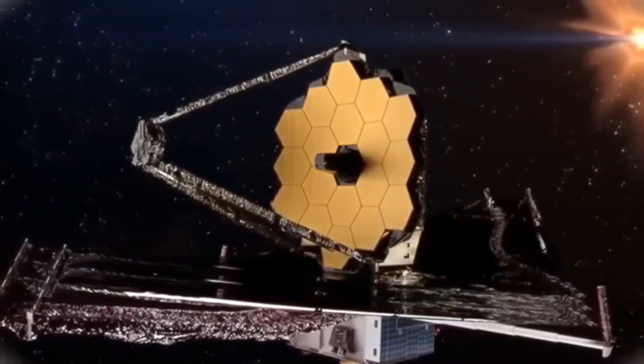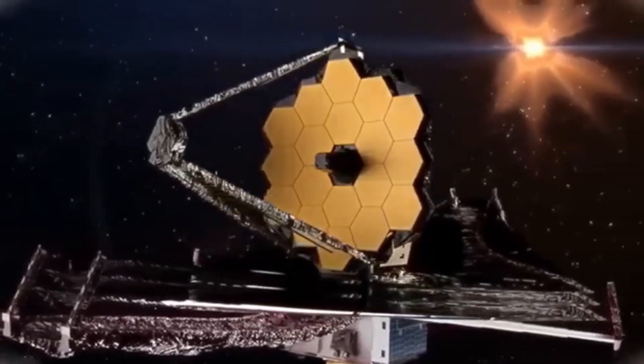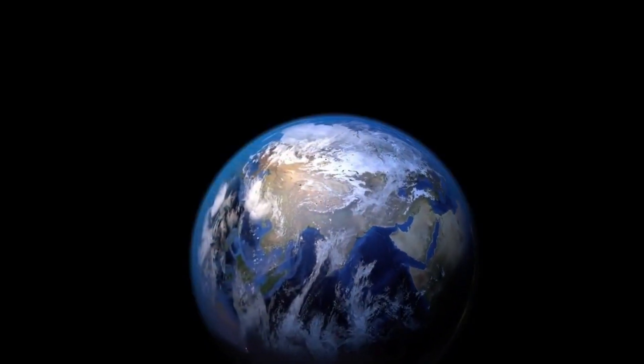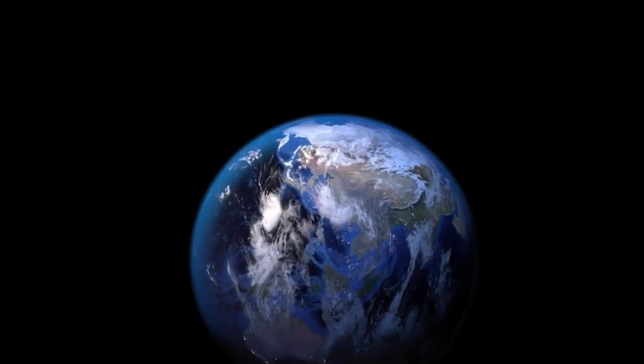Life on exoplanets might differ significantly from life on Earth. Extremophiles on Earth, such as bacteria that survive extreme heat, cold, or acidity, illustrate the diversity of life forms that could exist elsewhere.